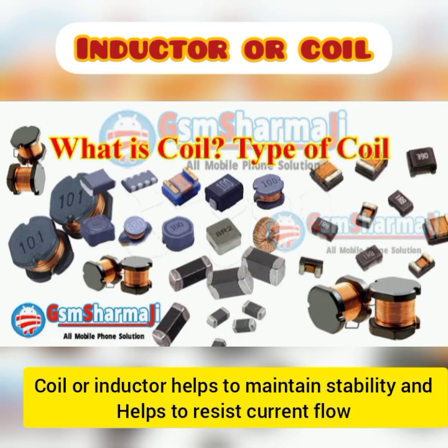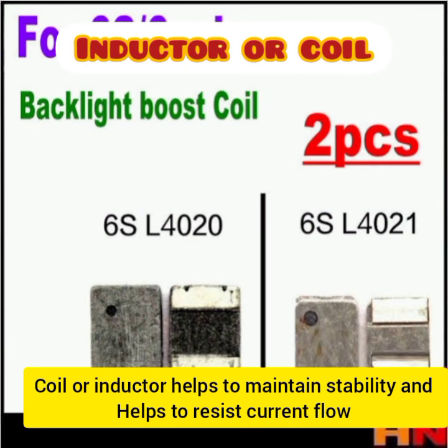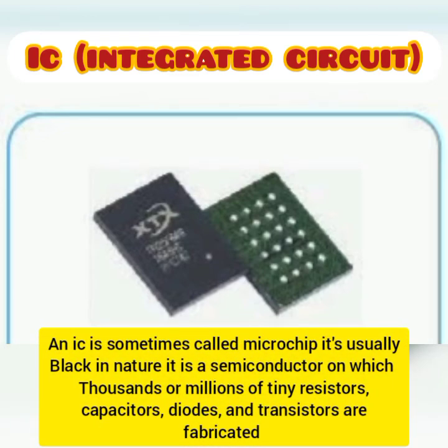The next component is the coil, also called an inductor. A coil helps to maintain and stabilize the flow of current on a mobile phone and also resists the flow of current. It is always found on the main PCB board, close to the power IC or close to the screen clip.